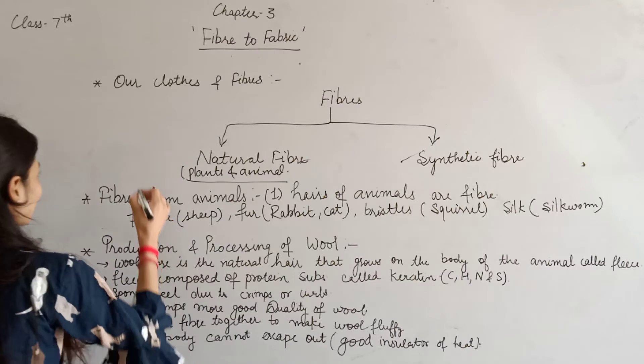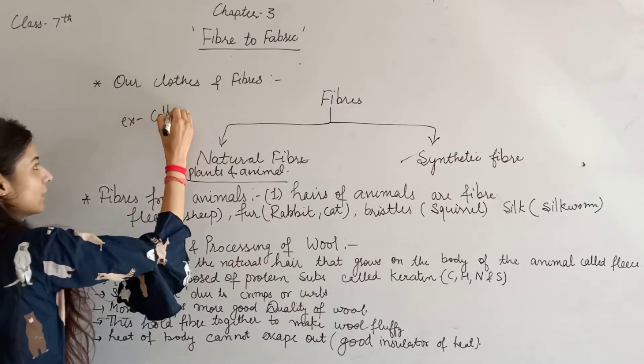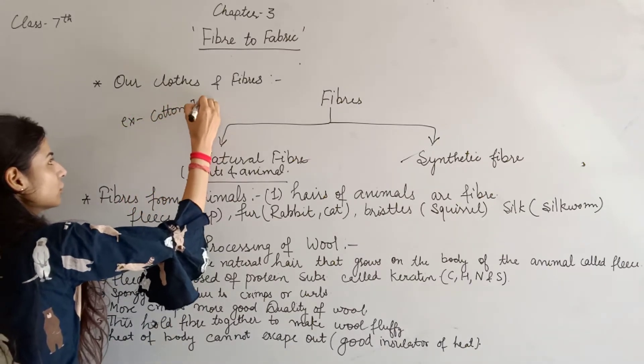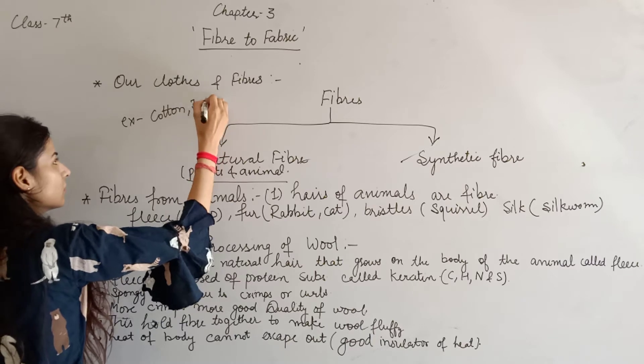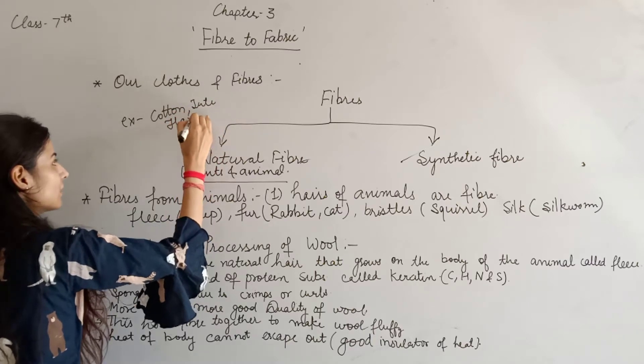For example, fibers found from plants include Cotton, Jute, and Flax.